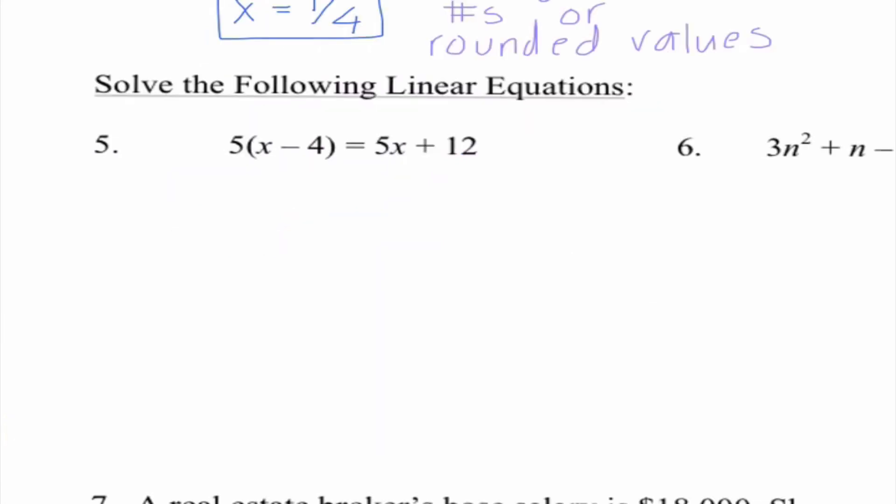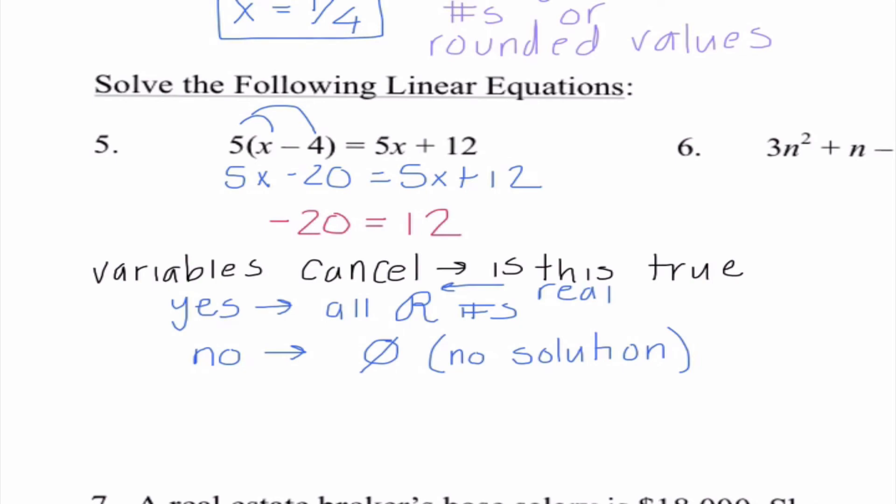Number 5. We're going to start off by distributing 5 to everything on the left side here. So I'm going to get 5x minus 20 equals 5x plus 12. And something kind of strange happens now. When I try to get my x's on the same side, I would subtract 5x from both sides, and my x's cancel out, and I end up with something like -20 equals 12. Whenever our variables cancel out, we need to ask ourselves a question. Is this true? Is -20 equal to 12? And you may have also added 20 to both sides. Regardless, you're going to have some sort of equation with a number equal to a number and you're asking if it's true. In this case, no, it's not. So whenever we answer no, that means we have no solution. And the reason being, regardless of what value we substitute in for x, it's never going to make a true statement.